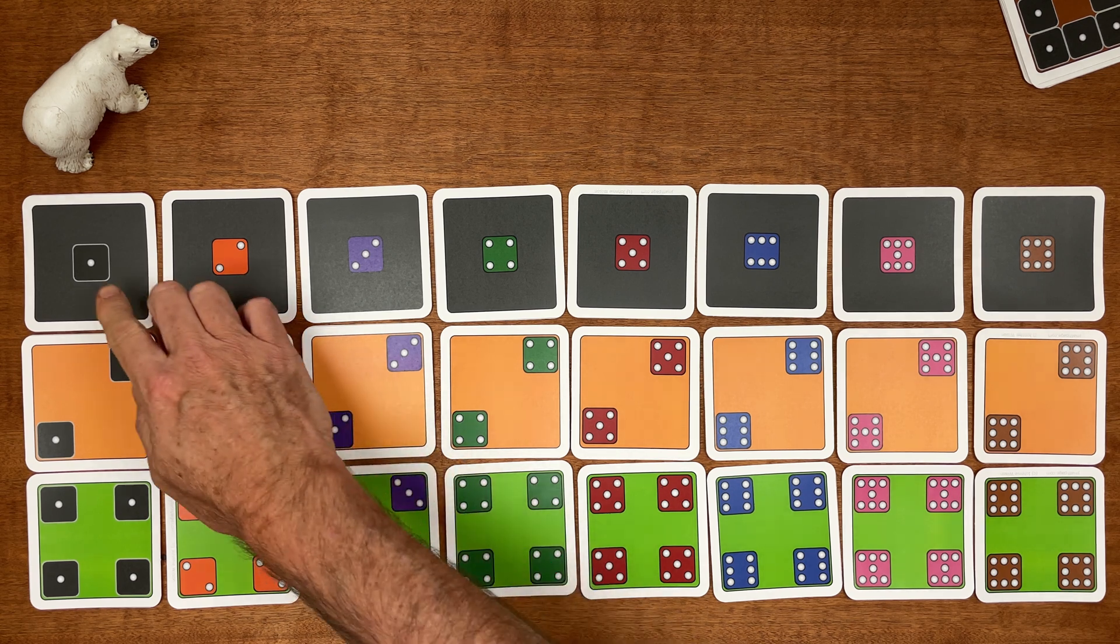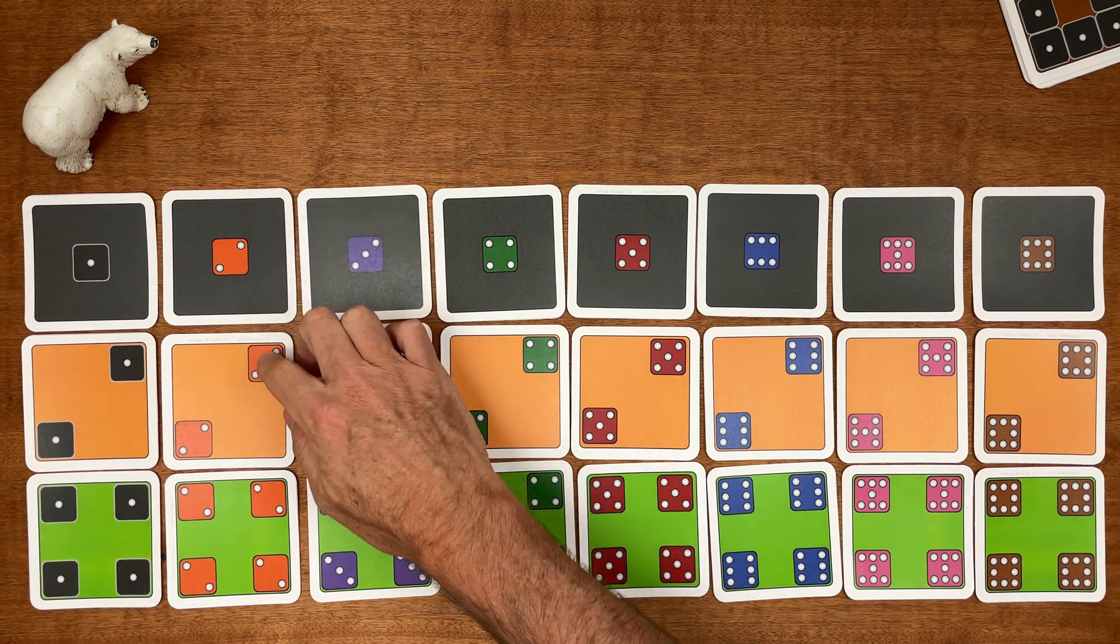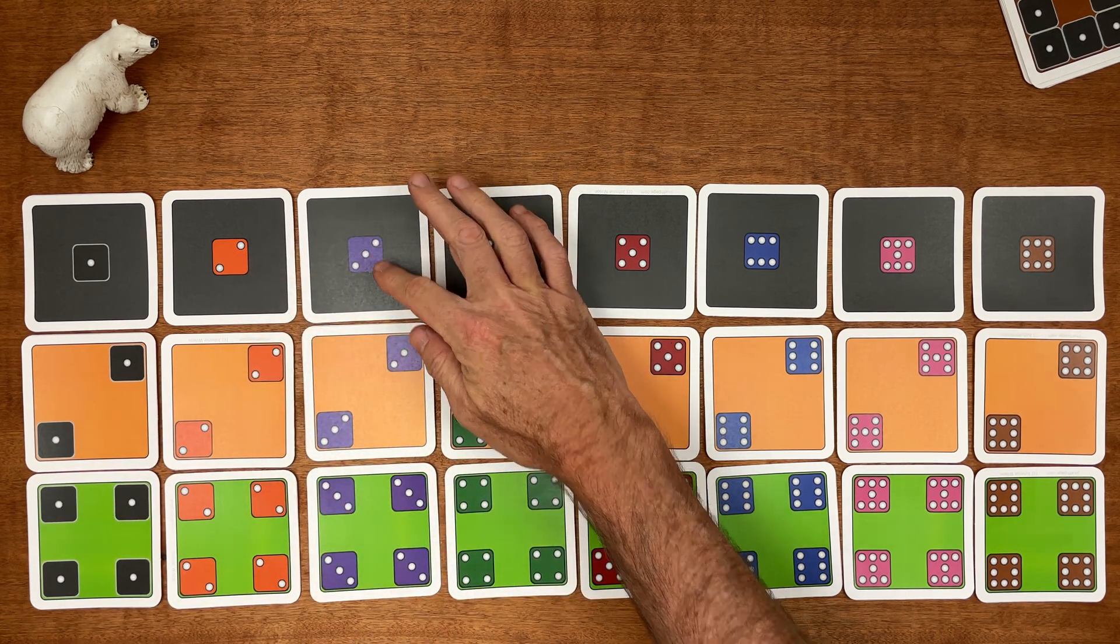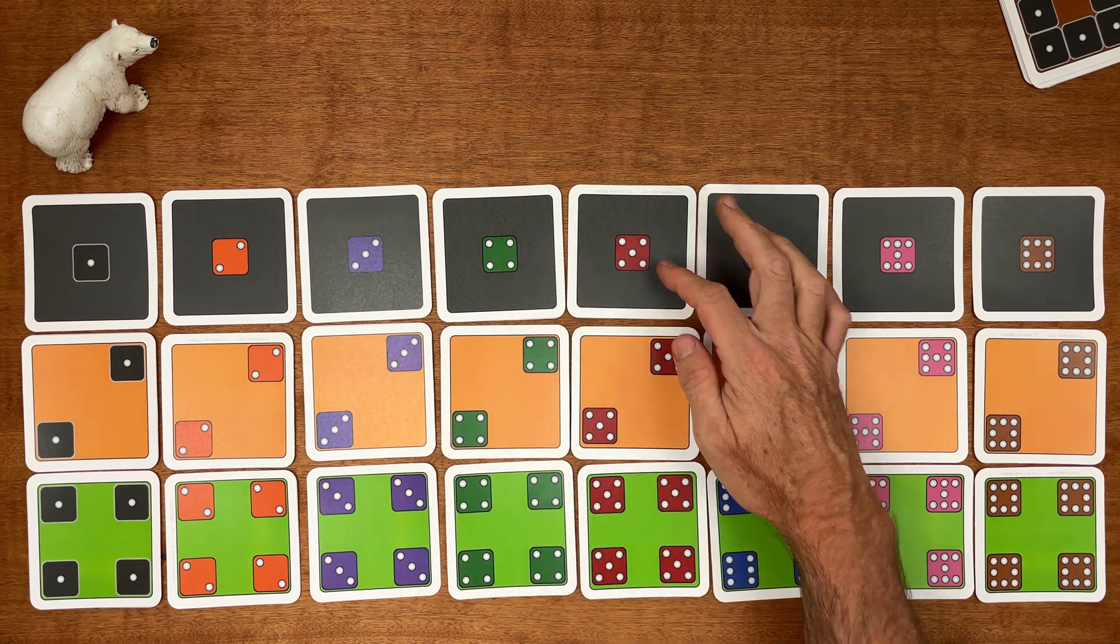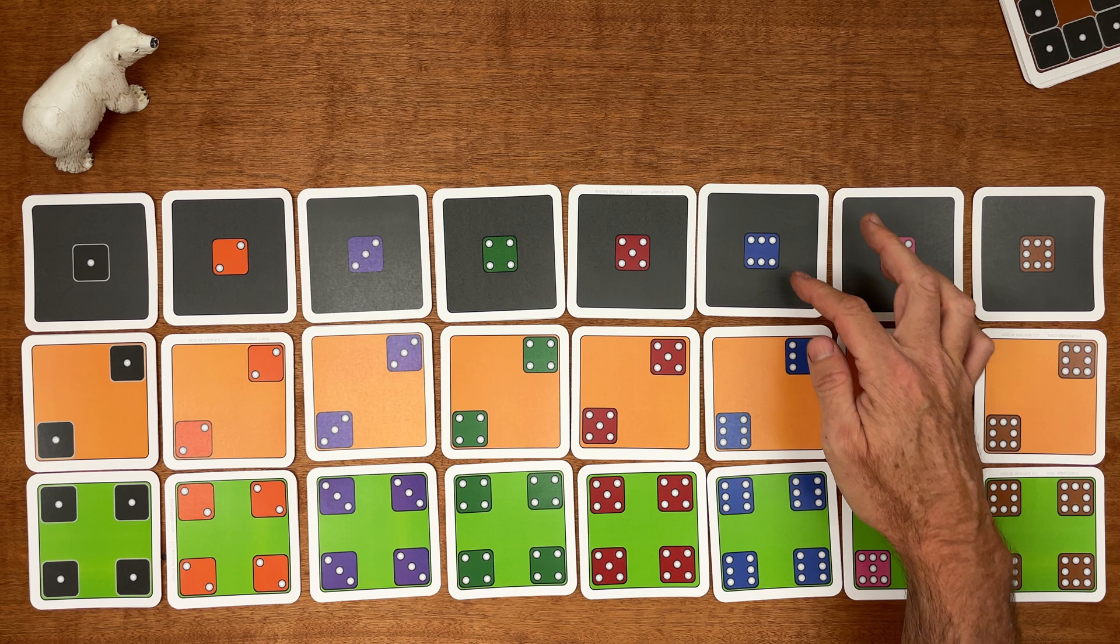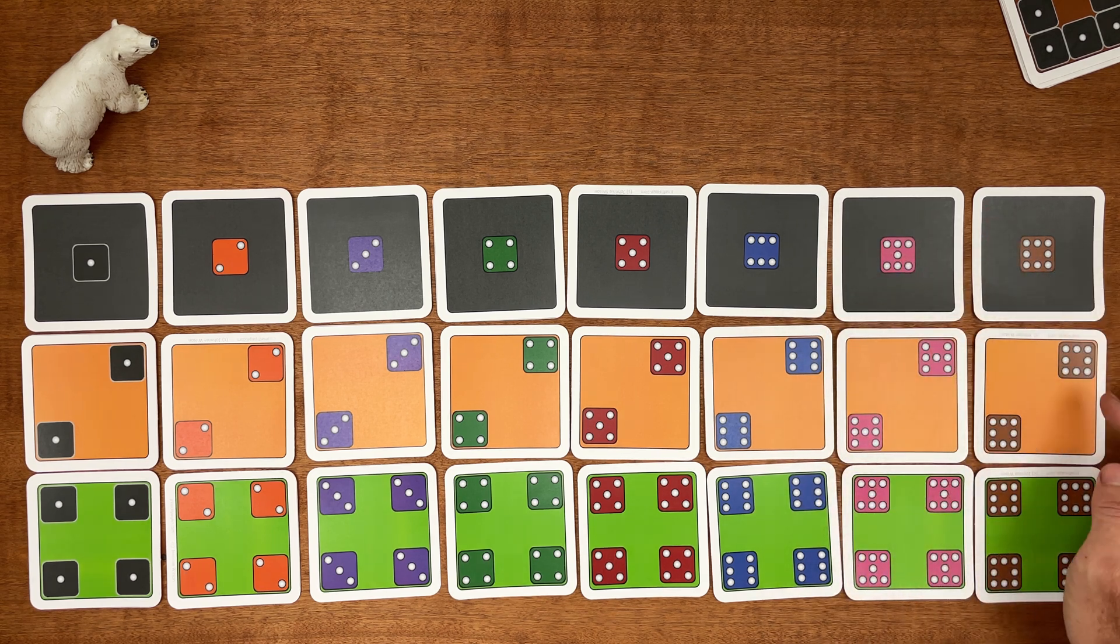I notice that there are ones here: one, one, one. And this: two, two, two. Three, three, three. Four, four, four. Five, five, five. Six, six, six. Seven, seven, seven. Eight, eight, and eight.